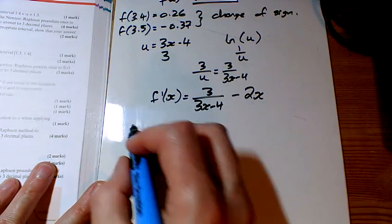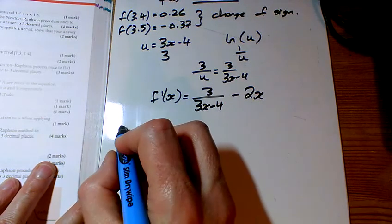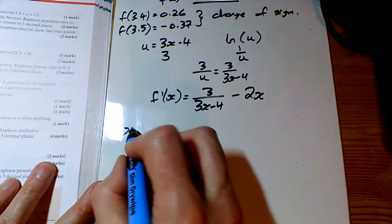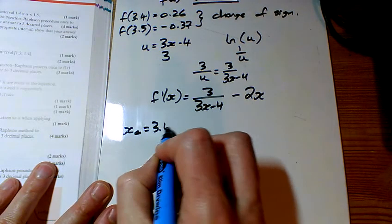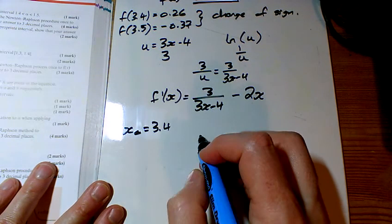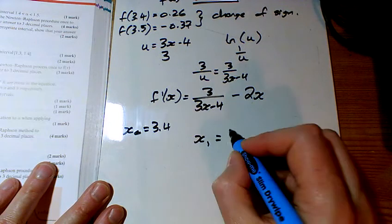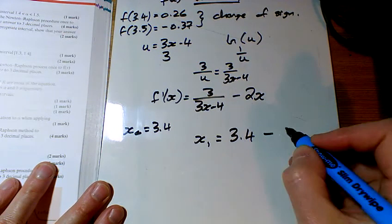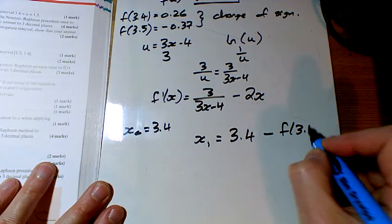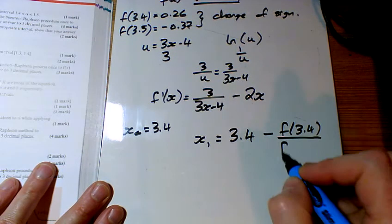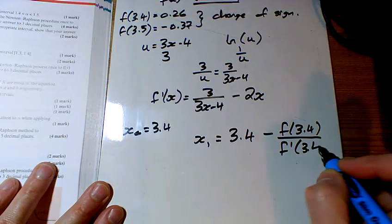And part c says taking 3.4 as your first value. So x0 is 3.4, so x1 is 3.4 minus f of 3.4 divided by f dashed of 3.4.